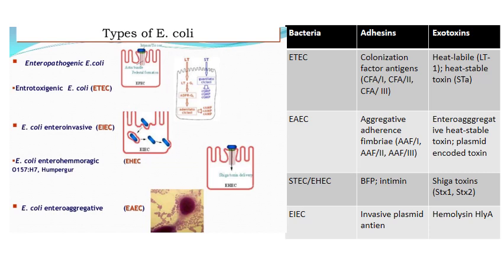Looking at the virulence factor chart: enteropathogenic E. coli has BFP — bundle forming pili — which enables it to cling tightly to our epithelial cells. It also has intimin, which is involved in its pathology and allows it to aggregate on our cells.